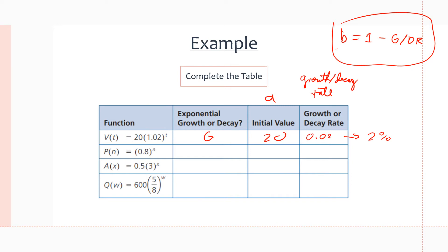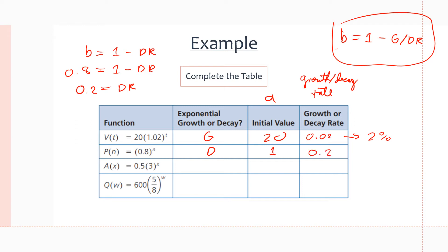Next equation: p(n) = 1 · 0.8^n. The b value 0.8 is less than 1, so it's decay. The initial value is simply 1, since there's nothing explicit in front of the brackets. For decay, b = 1 minus the decay rate. Since b = 0.8, the decay rate equals 0.2, or 20% decay rate.